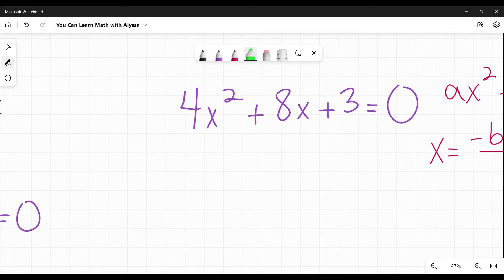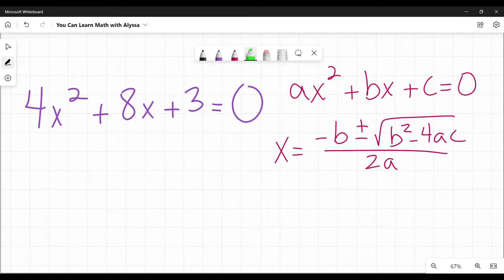Here is an example of it in use to solve 4x squared plus 8x plus three equals zero. Again, always make sure it is equal to zero before you start because that's what it has to be. I know that my a is four, my b is positive eight, and my c is positive three. So now I can plug things in.